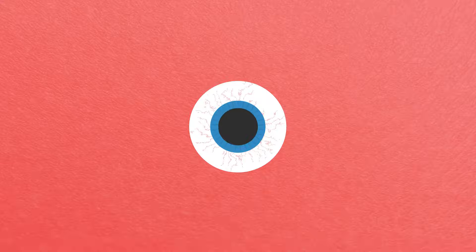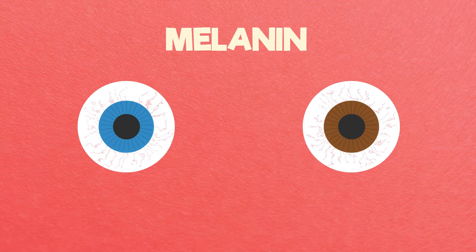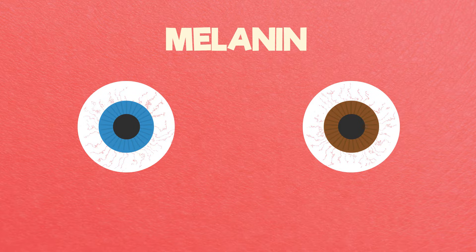The color of our iris depends on how much protein, called melanin, is present and is determined by our genetics. Brown eyed individuals have more melanin, whereas blue eyed individuals have less.